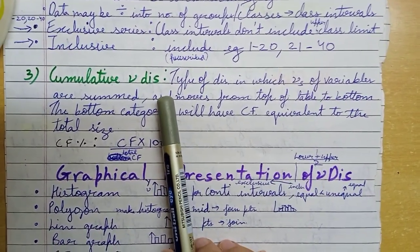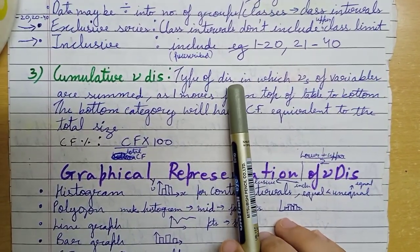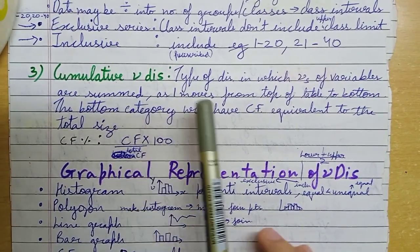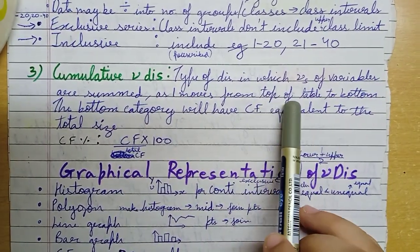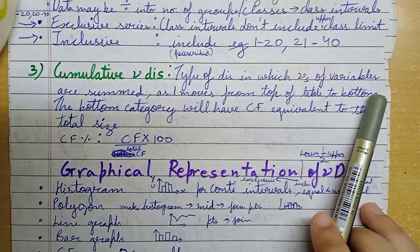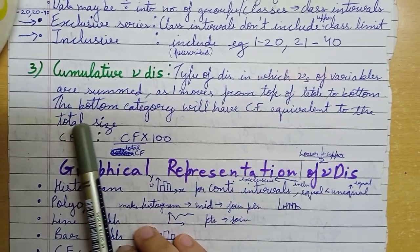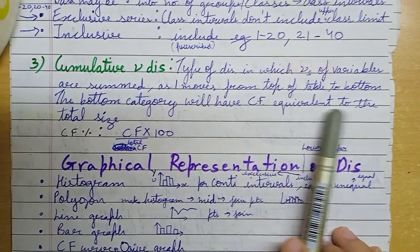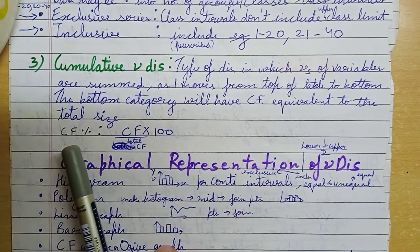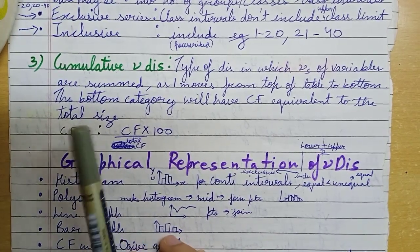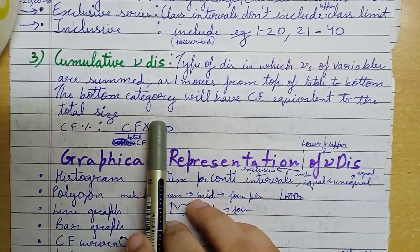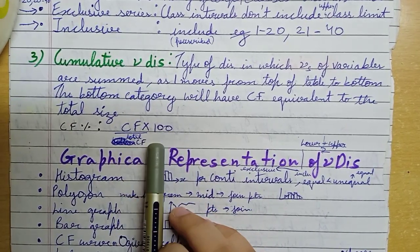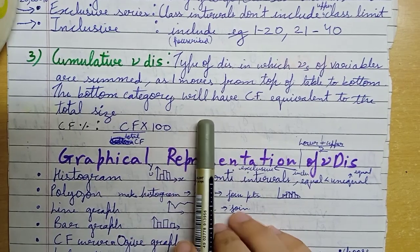Cumulative frequency distribution. This type of distribution, we can add the frequency of variables. We can add from the top of the table to the bottom, and the bottom category is the cumulative frequency which is equivalent to the total size. Formula is: cumulative frequency percentage equals cumulative frequency divided by the total cumulative frequency or the bottom frequency multiplied by 100.